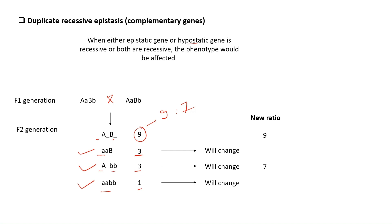There is no need to remember the ratios separately for each epistatic interaction. If you remember the dihybrid cross ratio of 9:3:3:1, and you are told the name of the epistatic interaction, you can easily derive the new ratio.